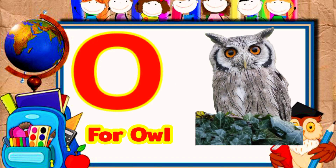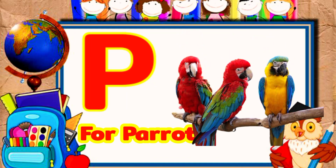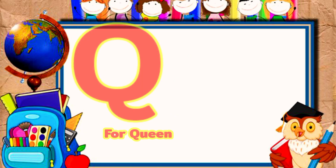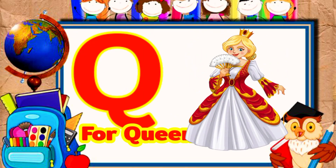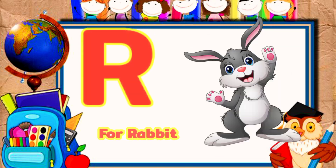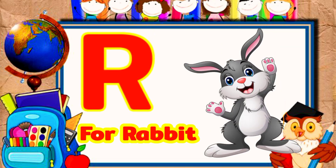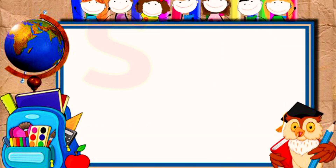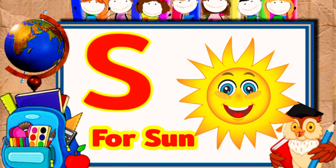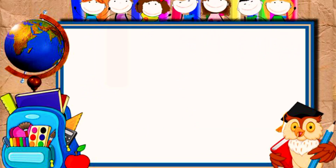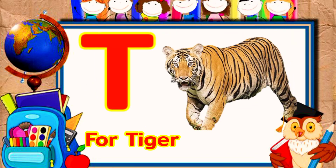P for parrot, U for queen, R for rabbit, S for sun, E for tiger.